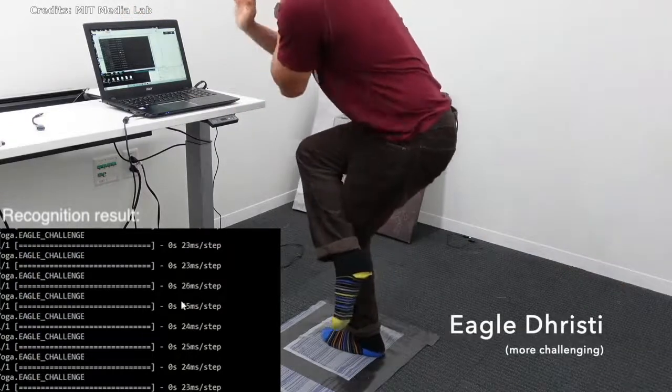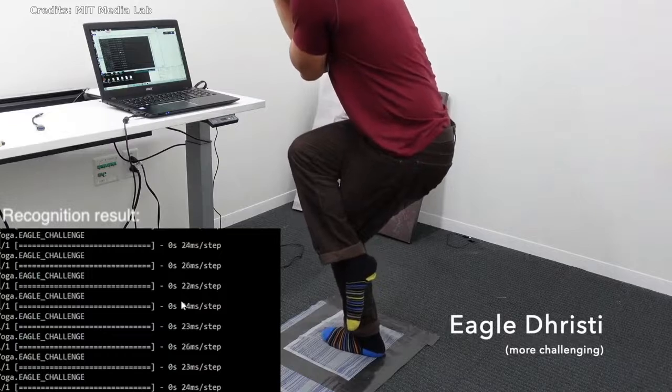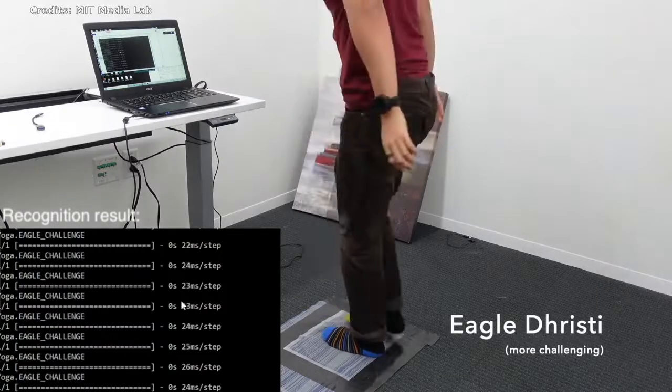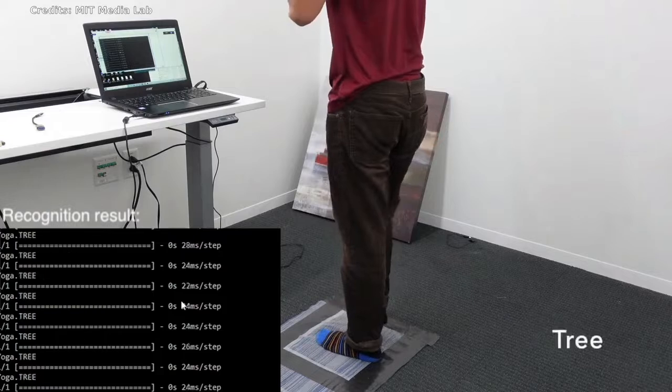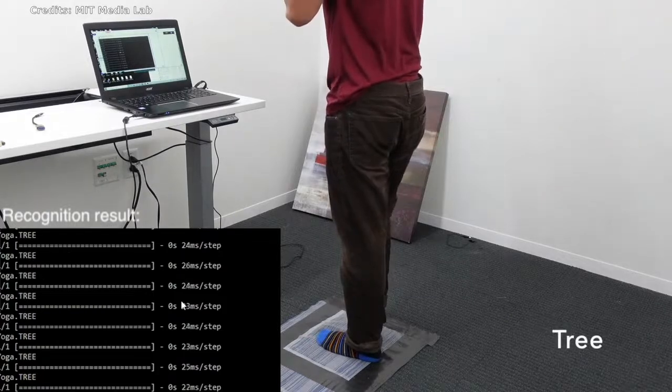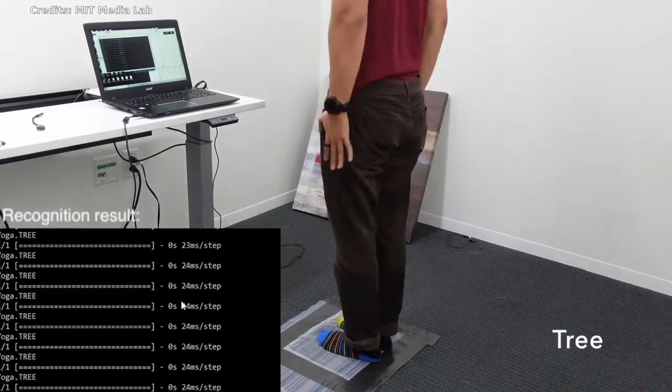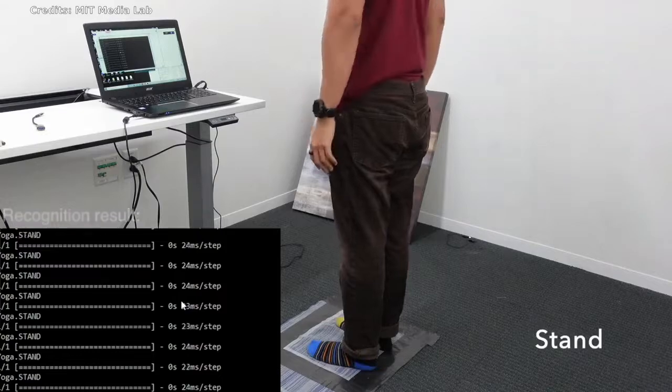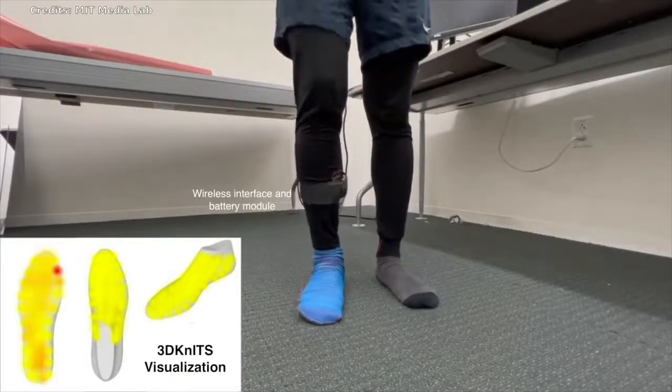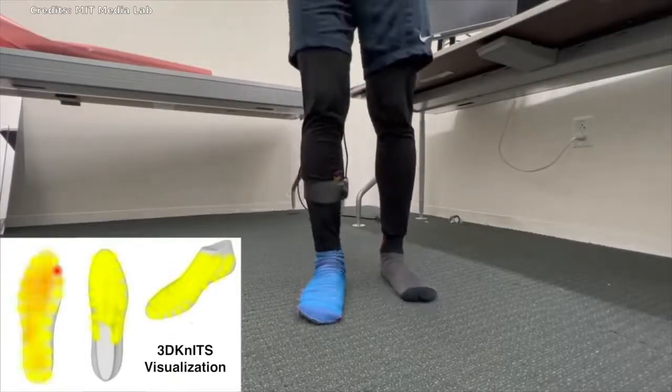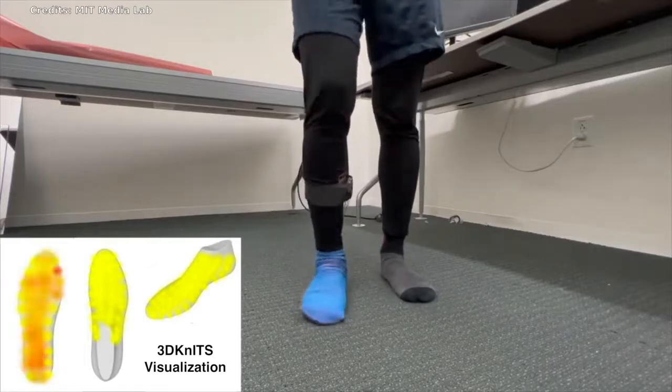Interdisciplinary collaboration can create some really unique applications. Now that the researchers have demonstrated the success of their fabrication technique, Vikasuna plans to refine the circuit and machine learning model. Currently, the model must be calibrated to each individual before it can classify actions, which is a time-consuming process. Removing that calibration step would make 3D knits easier to use.